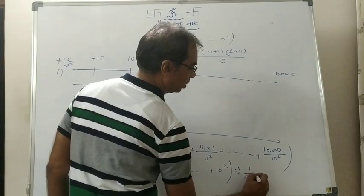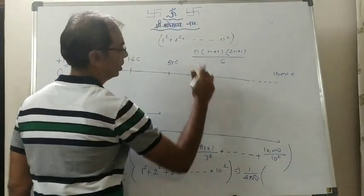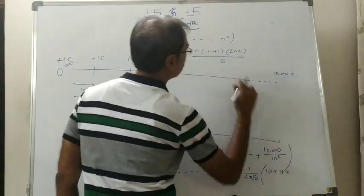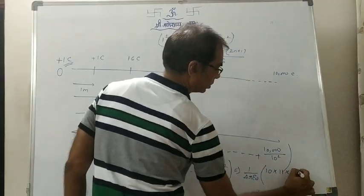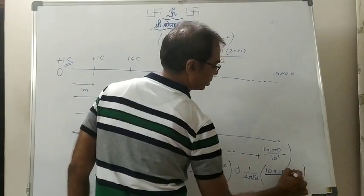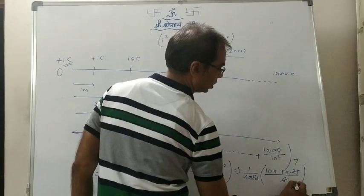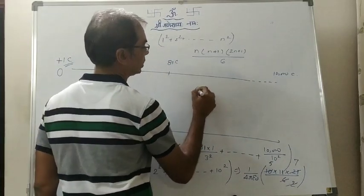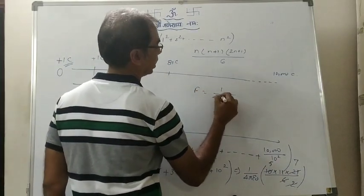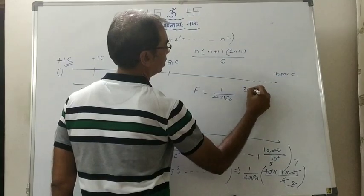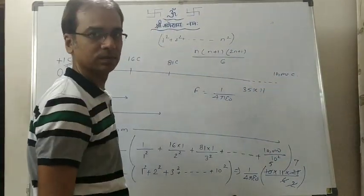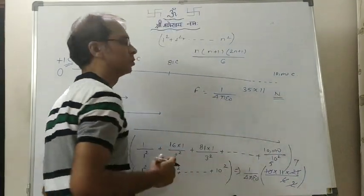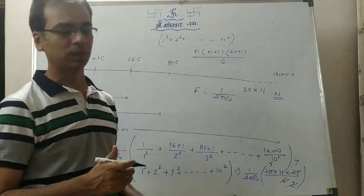So the force is 1 by 4πε₀, with n = 10, n+1 = 11, and 2n+1 = 21, divided by 6. So 10 × 21 divided by 6 gives 35, and then 35 × 11. So our force comes as 1 by 4πε₀ times 385 Newton. That is our answer. So this way, in different series forms, questions can be asked and we can solve them very easily with mathematics.